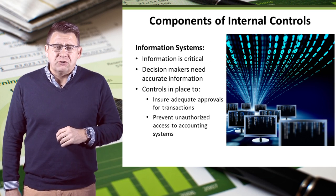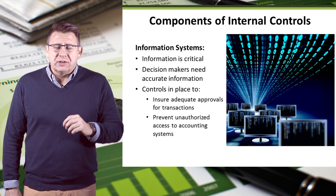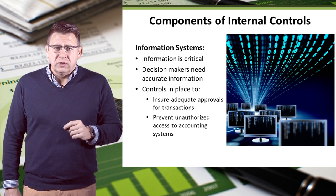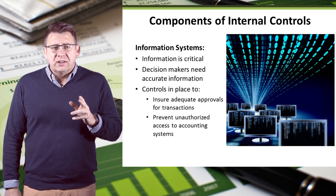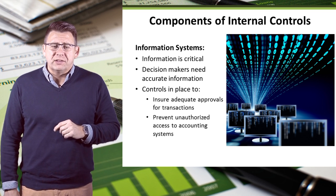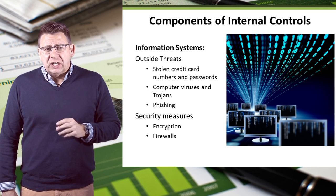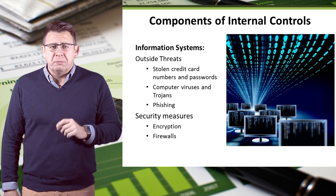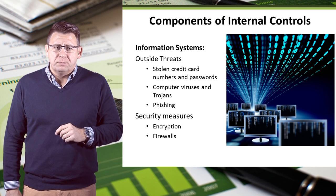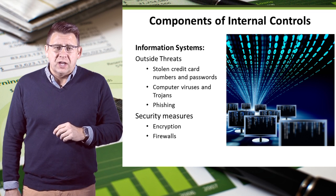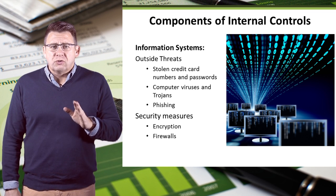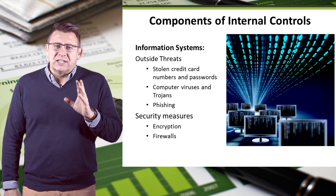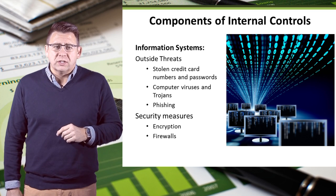Information is critical for managers to make accurate decisions. Internal controls are in place to ensure adequate approvals are in place for transactions and to prevent unauthorized access to accounting systems. Information systems also protect customer information, not just the business's own data. Companies have devised security measures to address e-commerce risks, including encryption and firewalls.